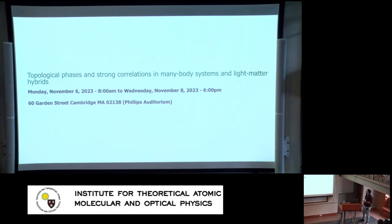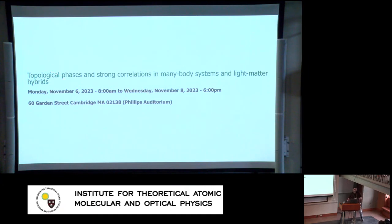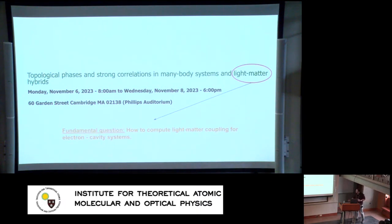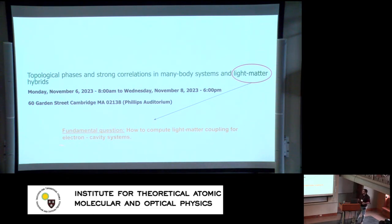The topic of this workshop is about topological phases and strong correlations in many-body systems and light-matter hybrids. As was explained, we would like to use cavities and light-matter hybrids in order to create our favorite topological phases and strong correlations. However, what I'll be discussing is a fundamental question on how to compute light-matter coupling in electron-cavity systems.